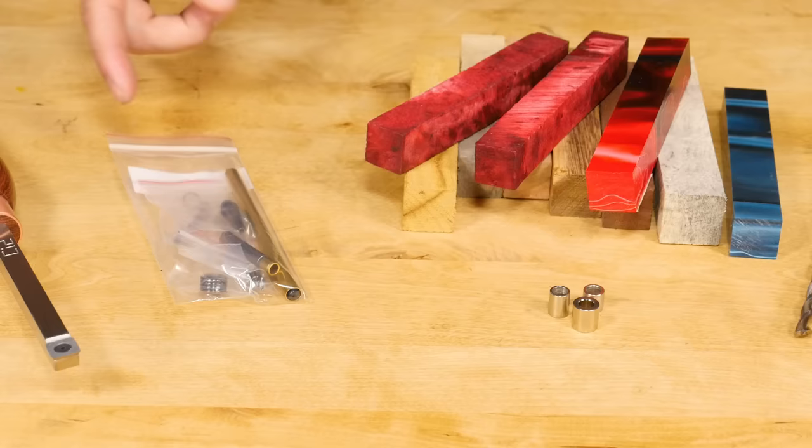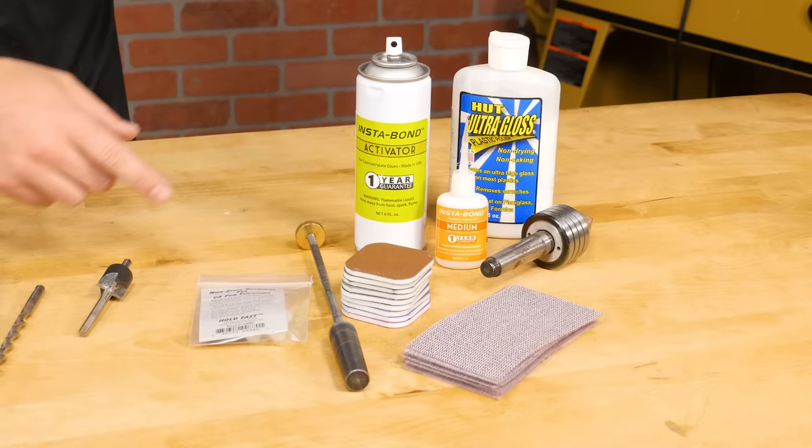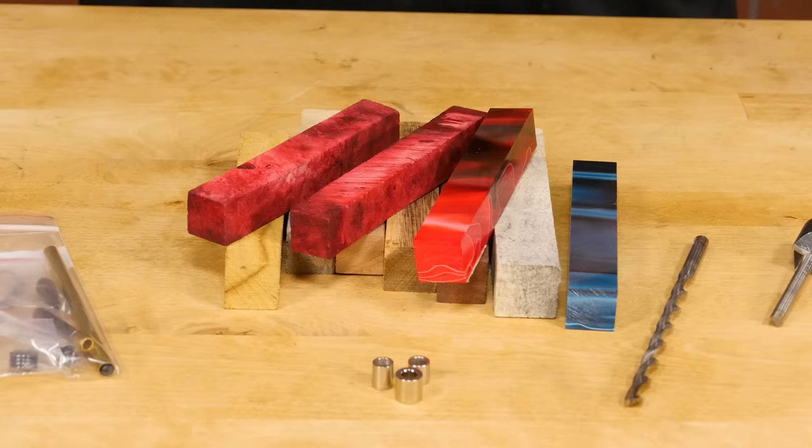Along with the carbide insert turning tool, to complete this project you'll need a pen kit, a turning blank of your choice, bushings, a drill bit, a barrel trimmer, and some standard turning supplies.